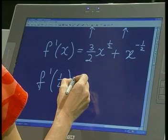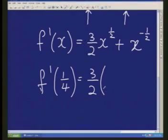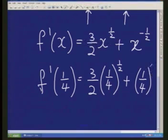Once we've got our derivative function, we can now find a specific value of that derivative. We need f dashed of a quarter. So let's look at what this looks like: 3 over 2 multiplied by a quarter raised to the half, plus a quarter raised to the negative a half.